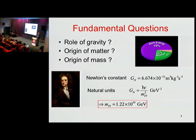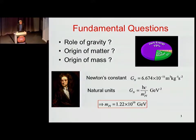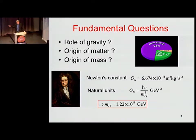1 GeV is the amount of energy required to create one proton, so 1.2 times 10 to the 19 GeV is a huge amount of energy — something we have not addressed directly. But if we're going to understand gravity and other aspects of fundamental physics, we're going to have to look at these energy scales, and to do that, we're going to have to use all the tools at our disposal.